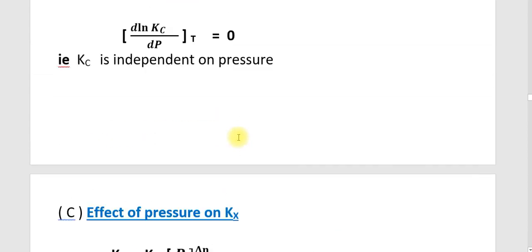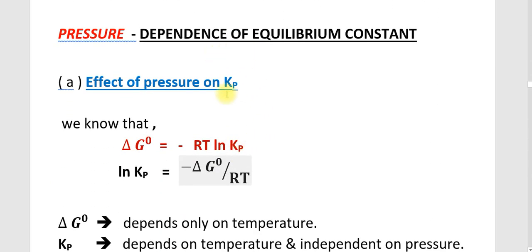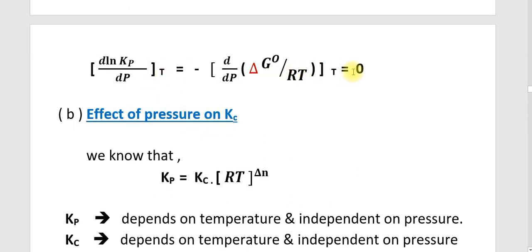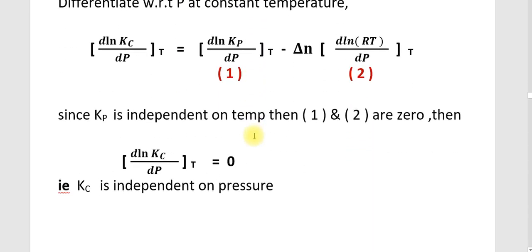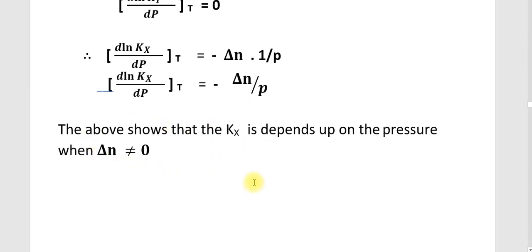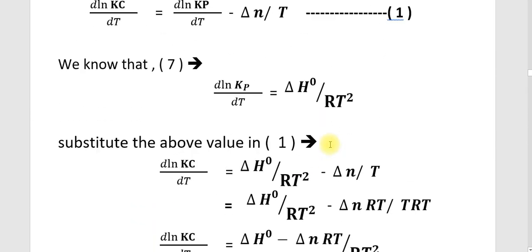That is all about the dependence of pressure on the equilibrium constant. To revise: the effect of pressure on Kp — differentiating at constant temperature gives zero, so Kp is independent of pressure. The effect of pressure on Kc — d(Ln Kc)/dP at constant temperature equals zero, meaning Kc is independent of pressure. The effect of pressure on Kχ — Kχ depends on pressure, because d(Ln Kχ)/dP at constant temperature equals minus delta N by P, and delta N may not equal zero. I think it is clear for you now.